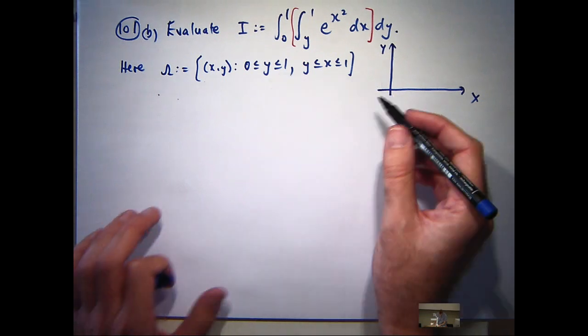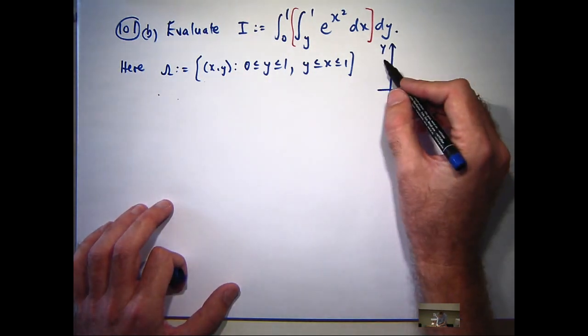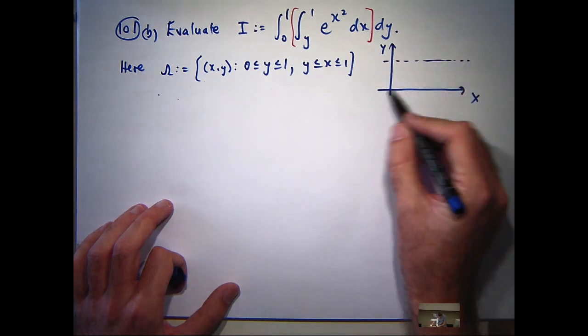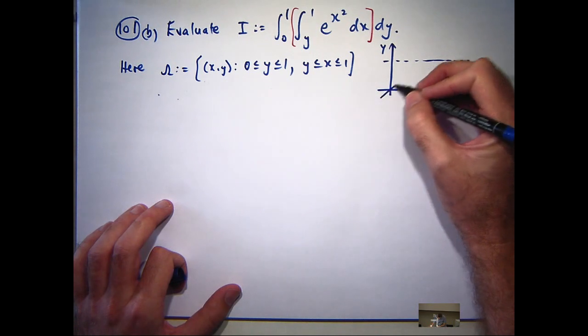Okay, so I'm going to draw in the lines y equals 0, y equals 1. So y equals 0 is there. x equals y and x equals 1. So I've got the line y equals x there.